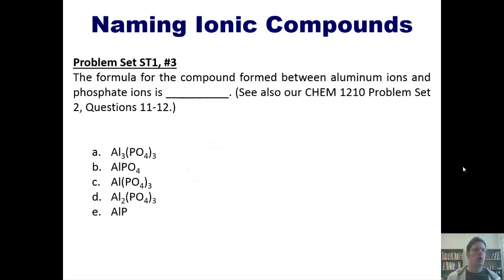And now another question. The formula for the compound formed between aluminum ions and phosphate ions is what? Now I'm not going to do this for you at all, but I will give you a tip. Please keep in mind that aluminum always has a plus 3 charge in an ionic compound. And phosphate, well, that's one of those polyatomic anions that I require you to memorize. You better know the charge.